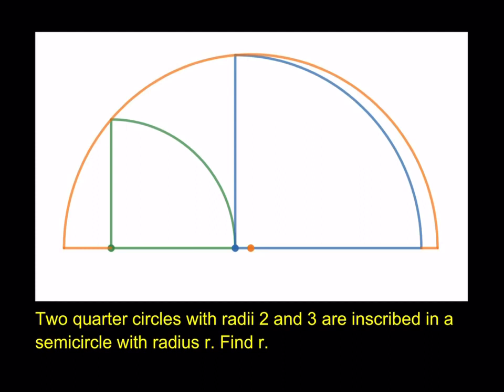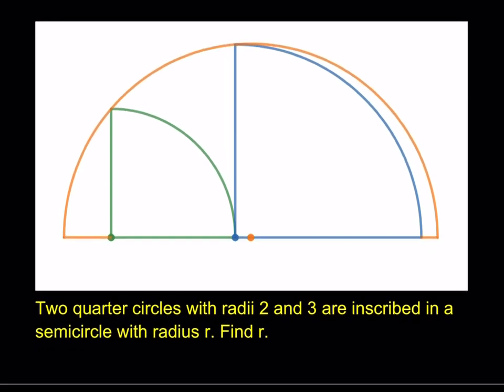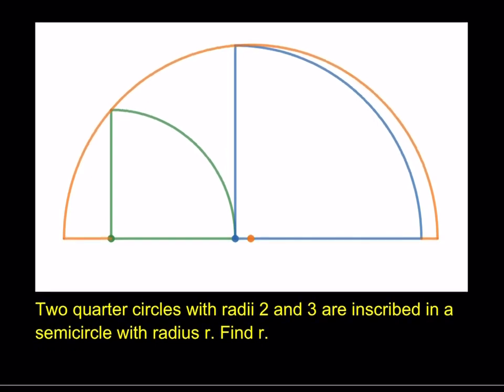Hello everyone. In this video we're going to be solving a geometry puzzle. Two quarter circles with radii 2 and 3 are inscribed in a semicircle with radius r. Find the radius.